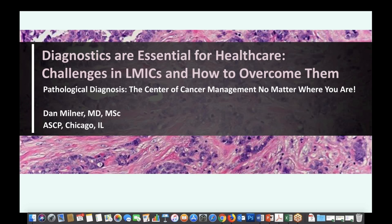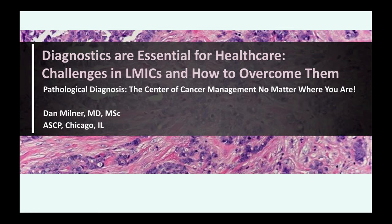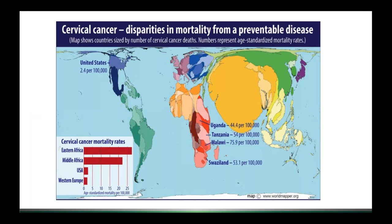Thank you Quentin. My name is Dan Milner, and I'm the Chief Medical Officer of the American Society for Clinical Pathology. For my brief part of this webinar, I'm going to focus on one disease — cancer — and how pathology labs are crucial to management of cancer no matter where you are in the world. Looking at cervical cancer disparities in mortality: in the United States, the incidence is 2.4 per 100,000, while in Uganda, Tanzania, Malawi, and Swaziland it ranges from 44 to 75 per 100,000. The reason is screening in the US and lack of screening in Africa.